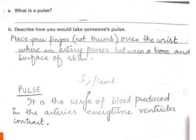What is pulse? Pulse is a surge of blood produced in the arteries every time the ventricles contract. This definition you have to write in that particular place. I have just clarified the diagram. A surge is produced, and that is called pulse.